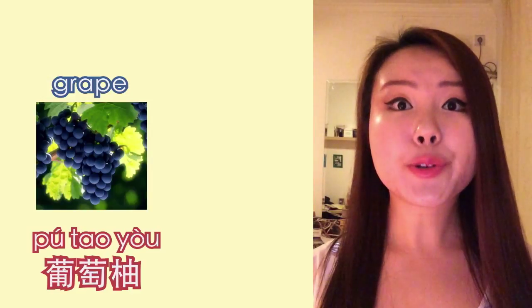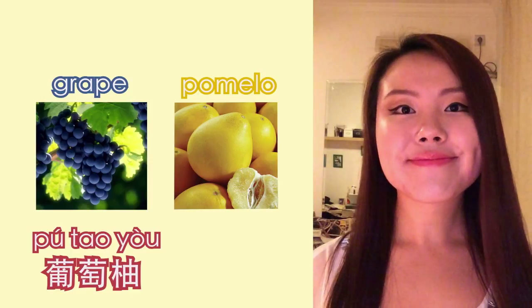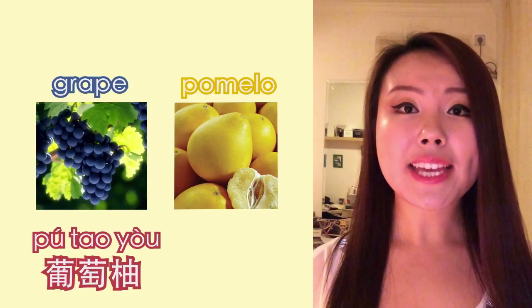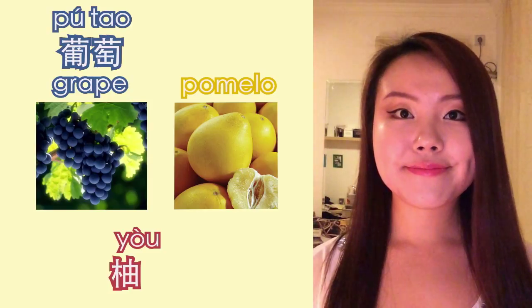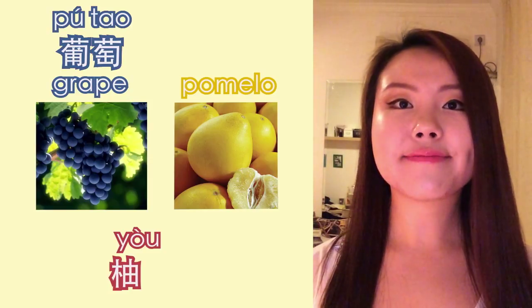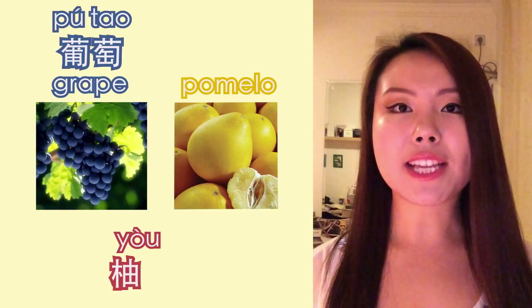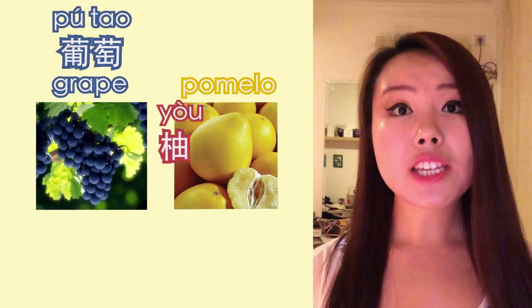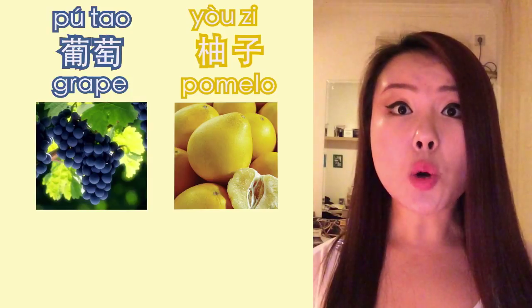Okay, so in this word, we actually already learned another two words — grape and pamelo. Grape is 葡萄, and pamelo is 柚子.